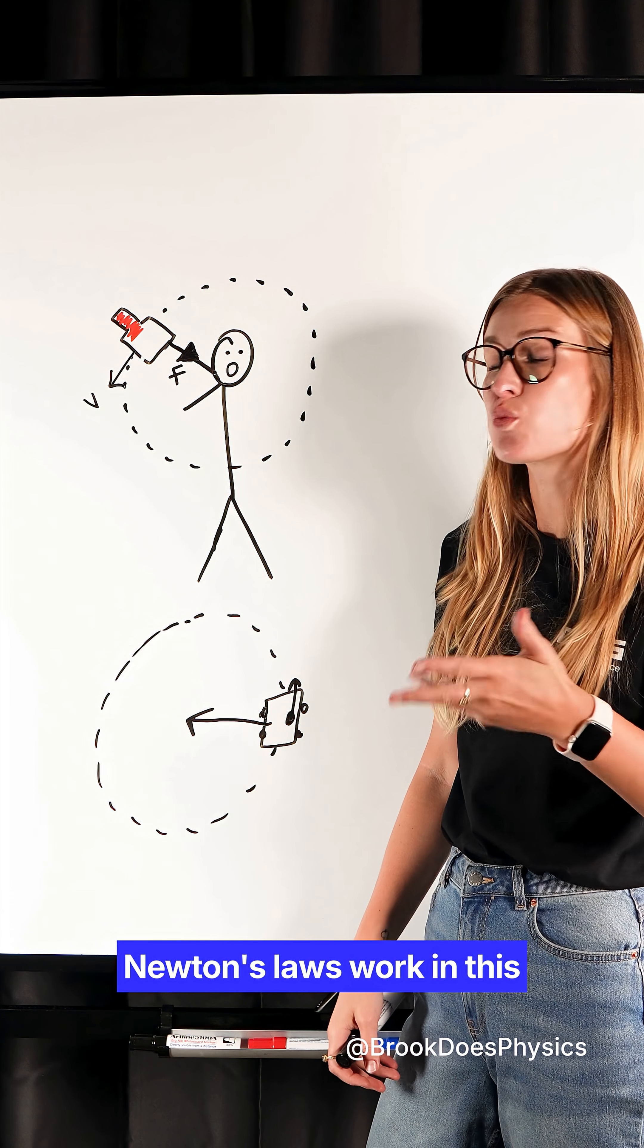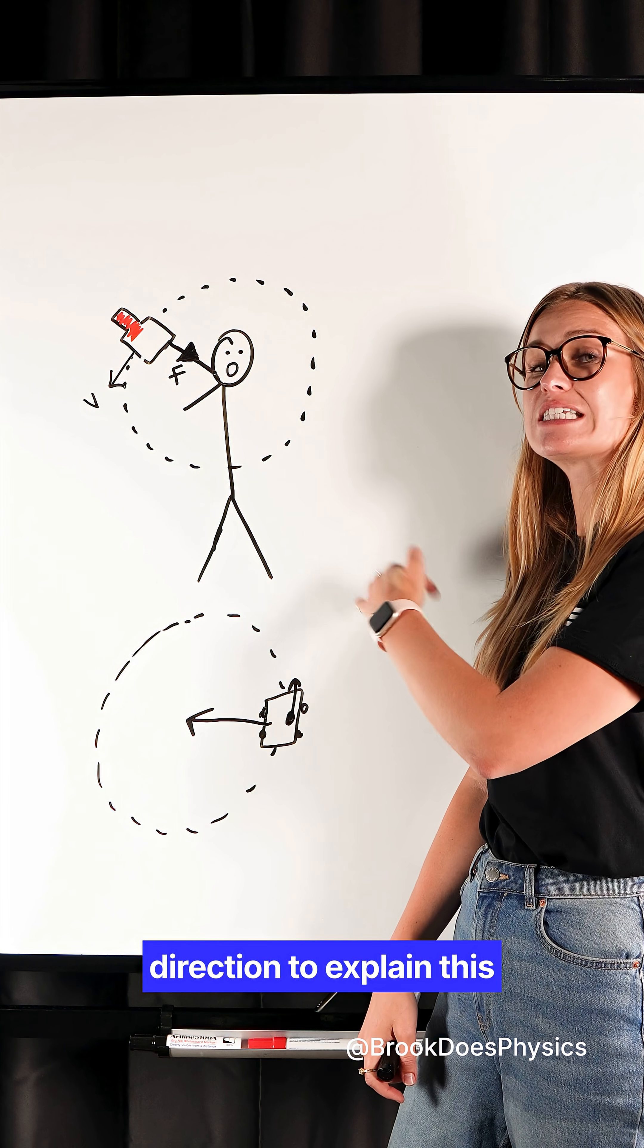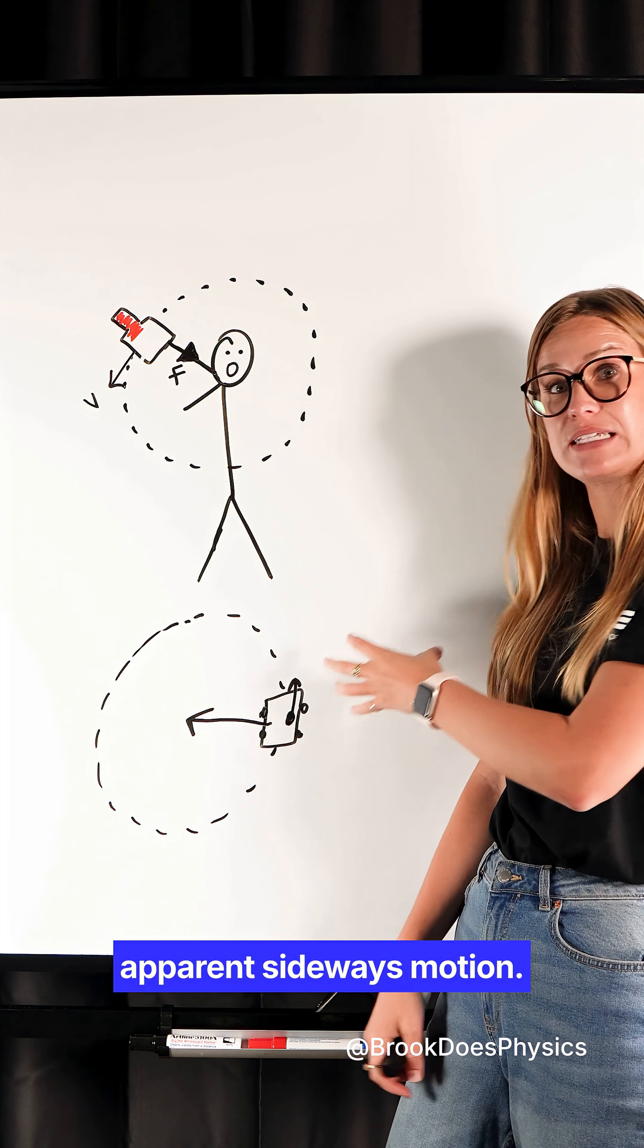We can only make Newton's laws work in this rotating frame or this non-inertial frame by having a centrifugal force. It's the fictitious force that goes in the opposite direction to explain this apparent sideways motion.